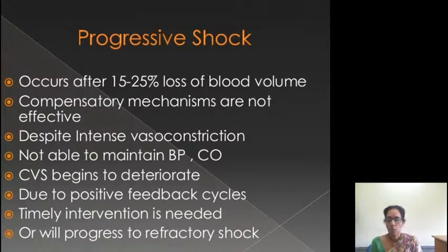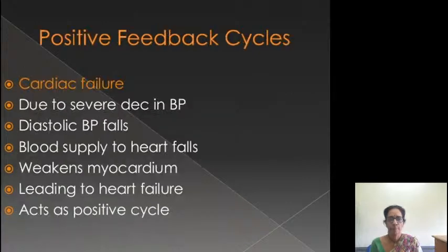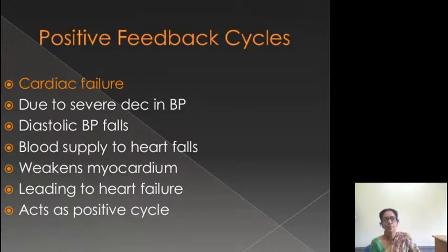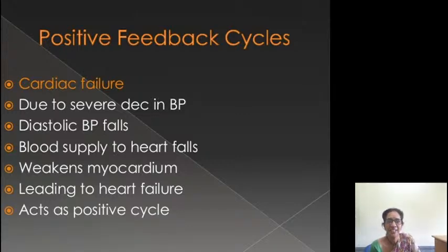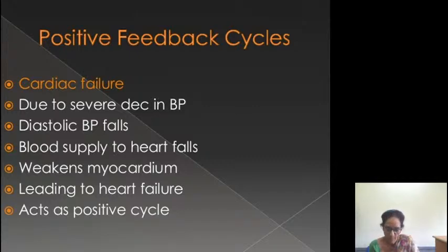So what will happen in progressive shock? Positive feedback cycles - one will lead to the other, and only deterioration will start occurring. Cardiac failure: because of the severe decrease in blood pressure, arterial pressure is very less, so both systolic and diastolic will fall. The blood supply to the heart - coronary flow - decreases, there will be coronary ischemia. When there is not much blood supply to the myocardium, myocardial contractility decreases a lot, leading to heart failure. This is a positive cycle.